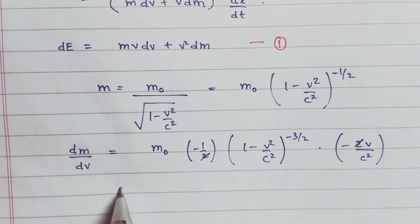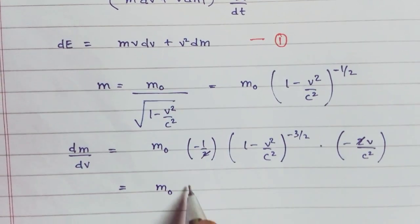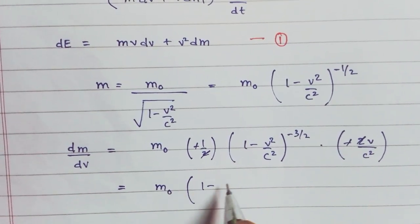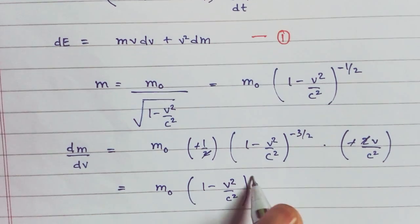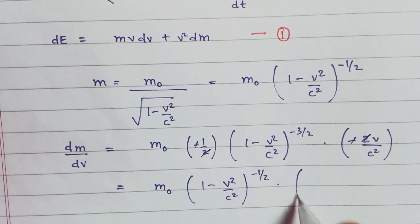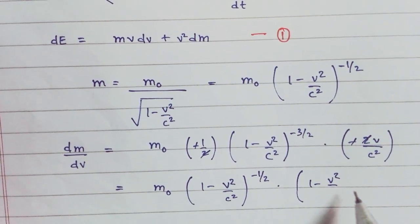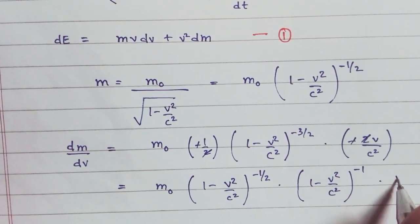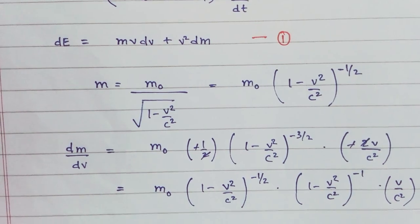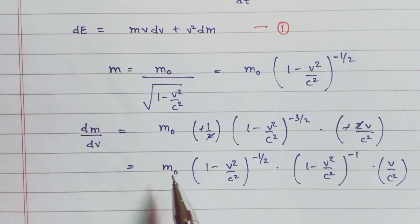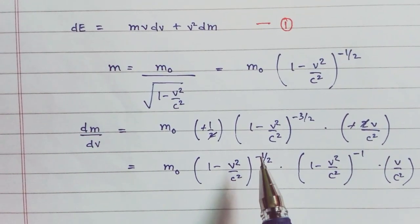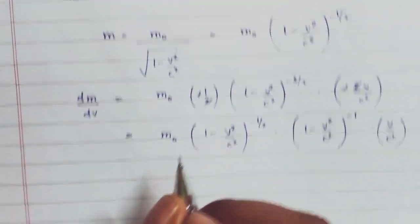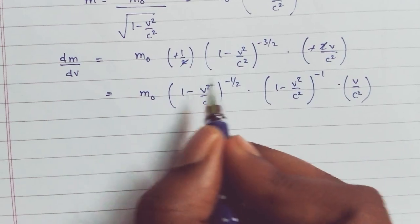We can rearrange it like this: M₀ times 1 minus V squared by C squared to the power minus half times 1 minus V squared by C squared to the power minus one times V by C squared. This term M₀ times 1 minus V squared by C squared to the power minus one by two is actually M, so we write M in place of this term.